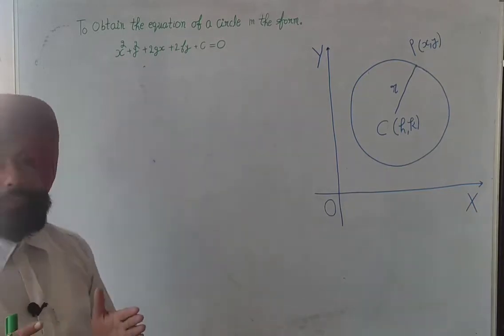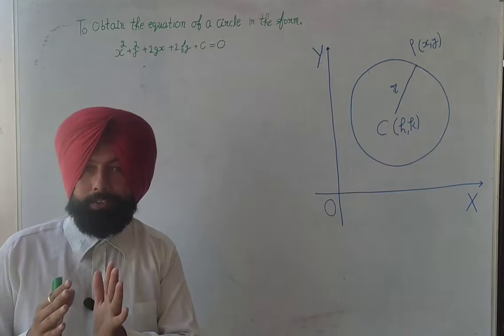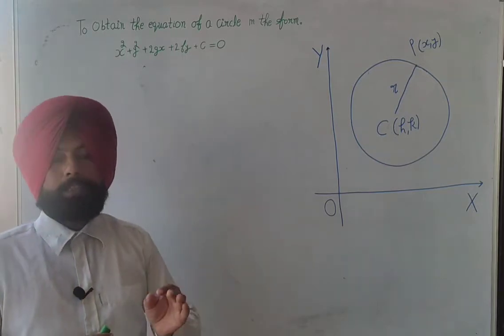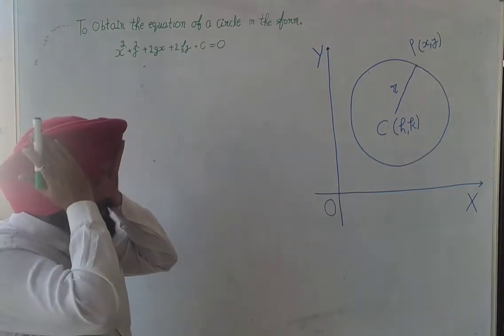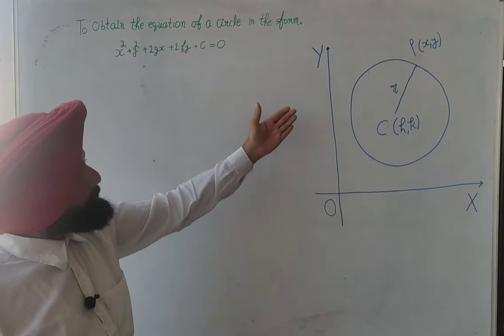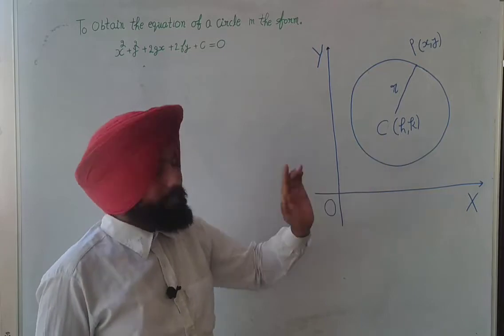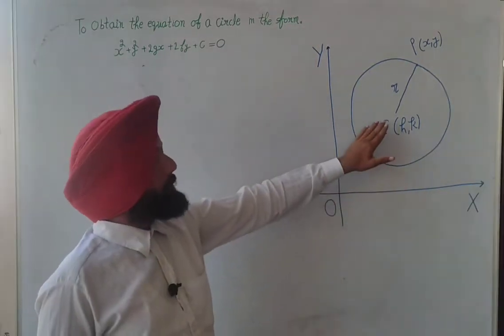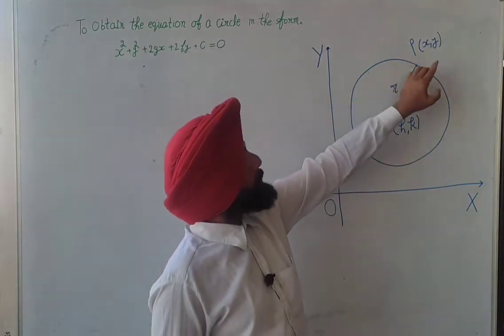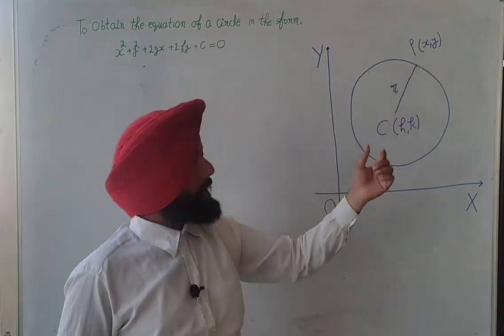In the previous videos we have derived standard form as well as the central form of a circle. Now suppose we have a circle whose center is at h and k, the coordinates of the center of the circle, and point p whose coordinates x and y lie on the circumference, and r is the radius.